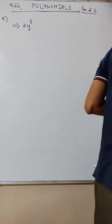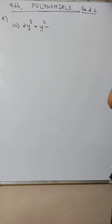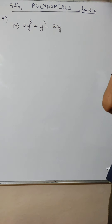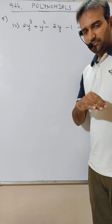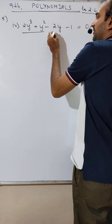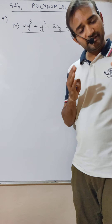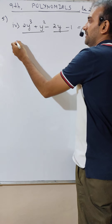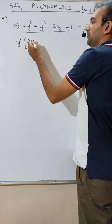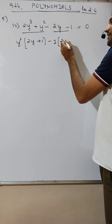2y cube plus y square minus 2y minus 1 equal to 0. Let us try — assuming you are the student — what will you think? Can we take common from each group and get the same common? Let's try: from 2y cube plus y square, can I take y square common? That gives 2y plus 1. Minus 1 is common here — 2y plus 1.